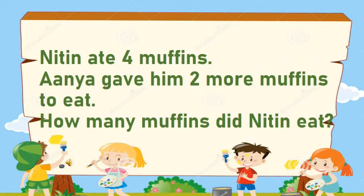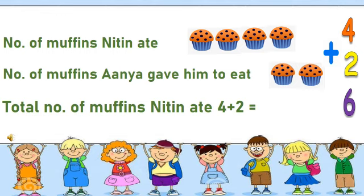Now let's solve this problem. Nitin ate 4 muffins. Aniya gave him 2 more muffins to eat. How many muffins did Nitin eat? Nitin ate 4 muffins — 1, 2, 3, 4. And Aniya gave him 2 more muffins to eat — 1, 2. The total number of muffins that Nitin ate: 4 plus 2, that is equal to 6.